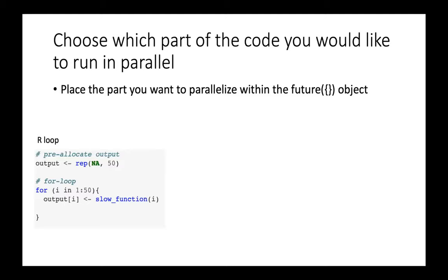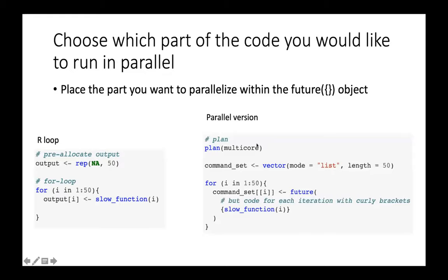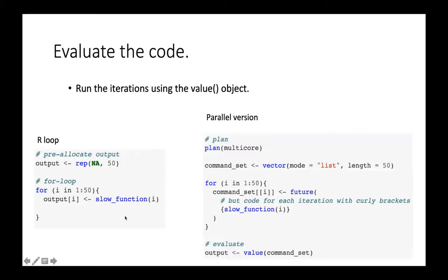How do you parallelize your code? Basically, it's really straightforward. You just take the part you want to parallelize and put it within this future object. Say you had this kind of for loop where you're plugging in numbers one through 50 and running it in this function called slow function. This would be generating the output into this array. If you wanted to make this suitable for future, first choose how you want to parallelize it. In this case, we'll do multicore. All you have to do is add future and then put that around the part you want to parallelize, in this case that slow function. By doing this now, this can be parallelized. But as I mentioned before, it didn't run it yet. You have to then use the value function, which will take that set of commands and then run it in parallel for you.